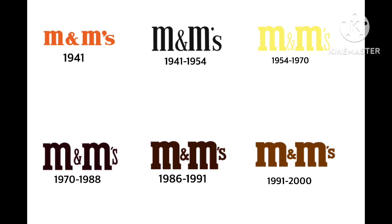1954 to 1970: same layout except it's yellow, and the ampersand and the S and apostrophe look a bit changed. 1970 to 1988: similar, and then 1986 to 1991 it's now brown.